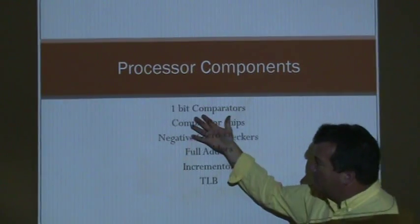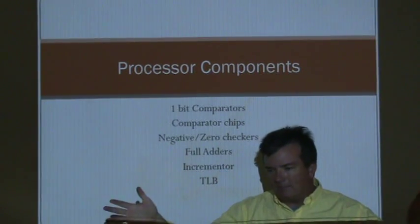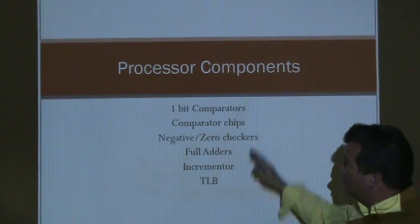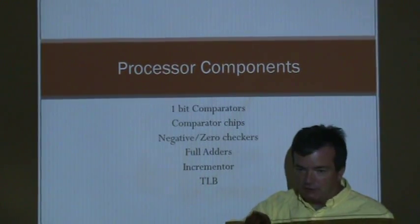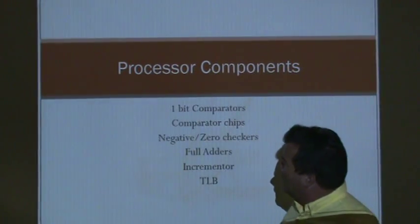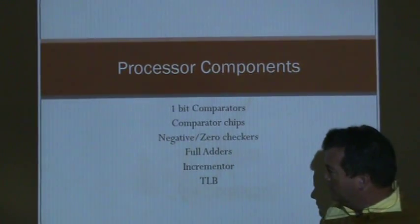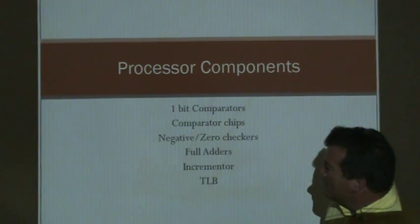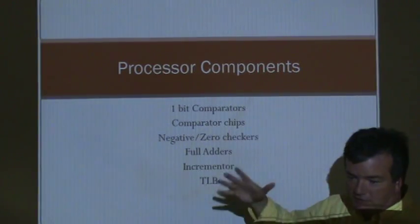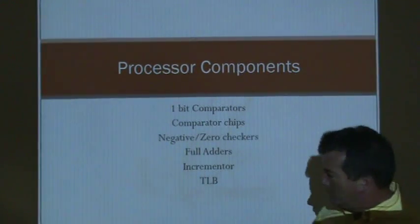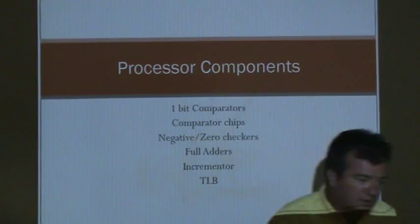We'll talk about a bit comparator — taking two bits and having a piece of electronics that tells you whether they match each other. That would be the opposite of an XOR gate; an XOR gate turns on if the inputs do not match each other. And then a chip that could take in many inputs and compare to see if they exactly match another vector of bits. A zero and a negative checker, a full adder, an incrementer which takes a value in binary and tells you what the very next value is, and then a piece of hardware called the translation look-aside buffer.